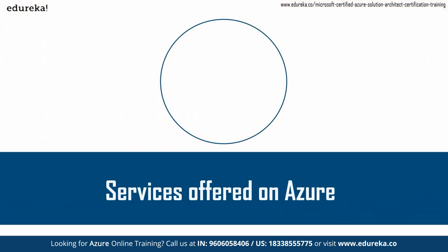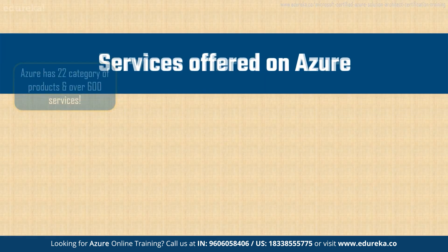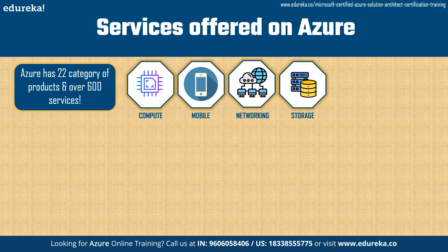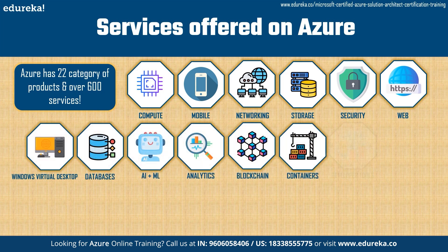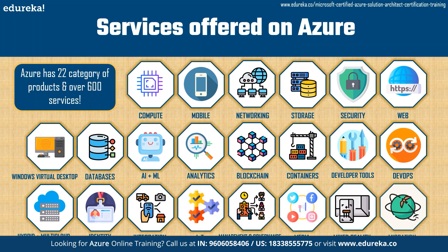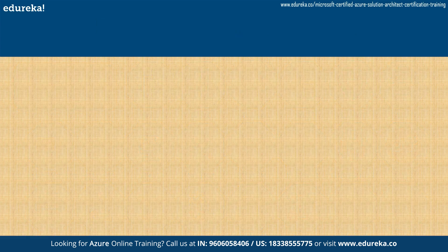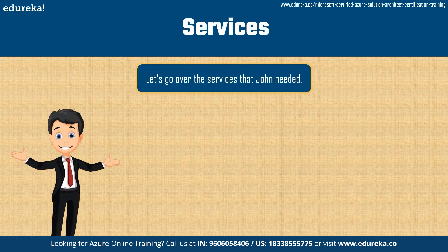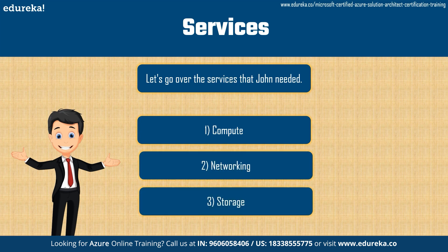Azure has 22 categories of products and over 600 services, so we can't cover all of them here — go to Azure's website to check out each category. John specifically needed three services: compute, networking, and storage. Let's take a look at each of those in a bit of detail.